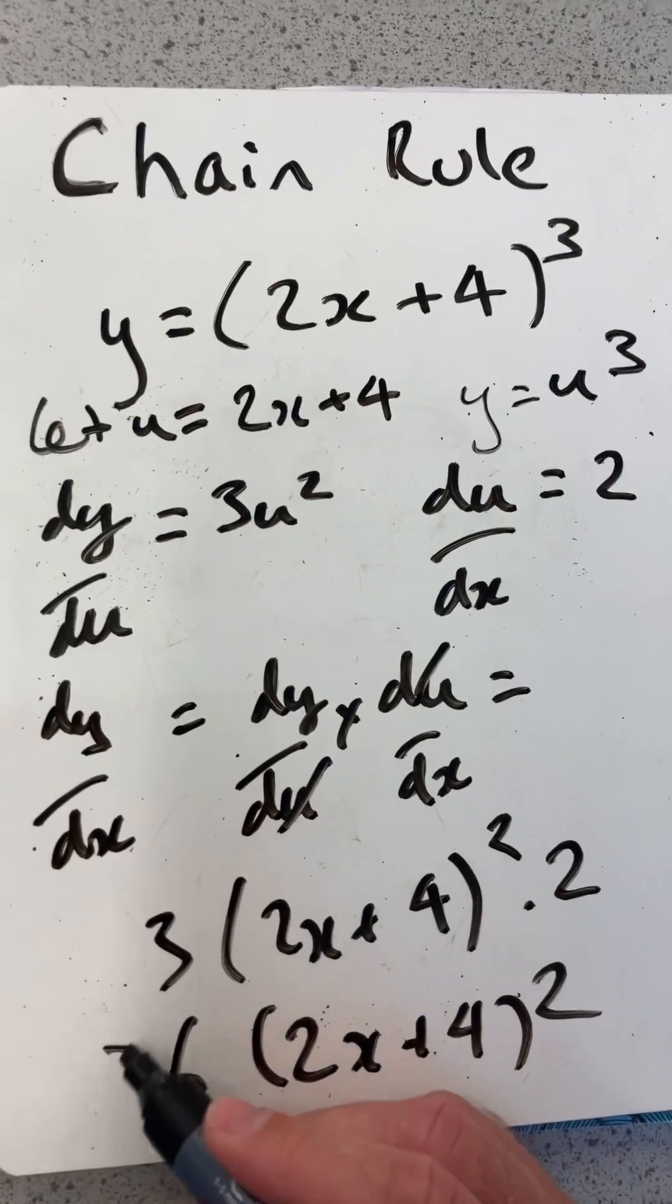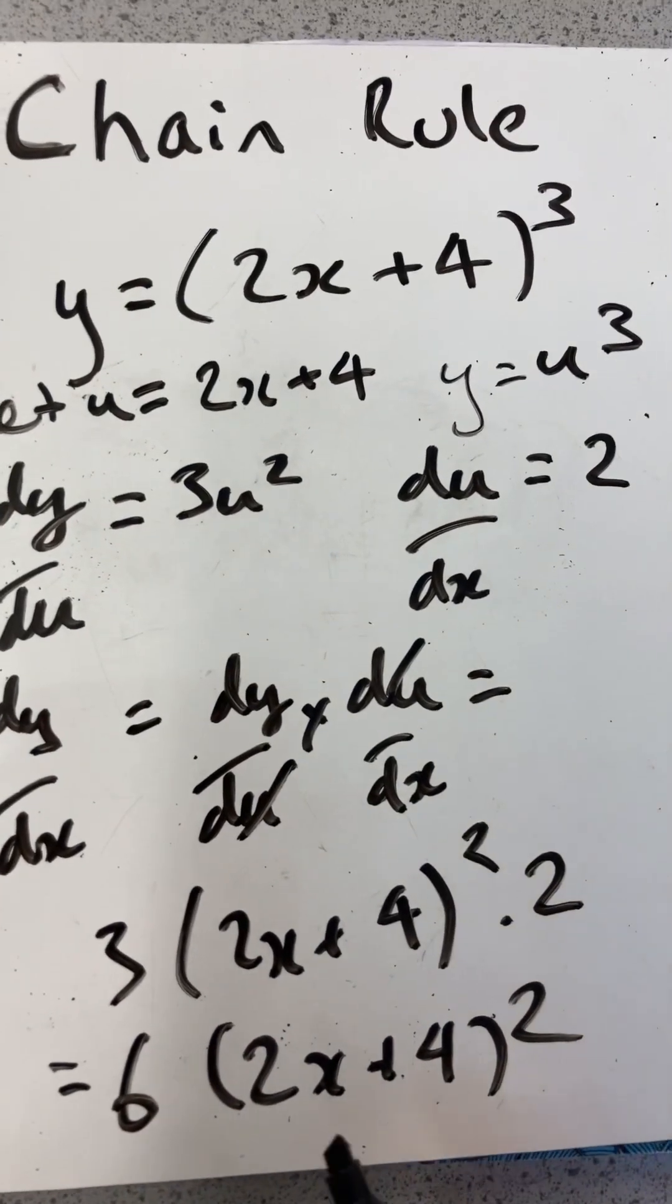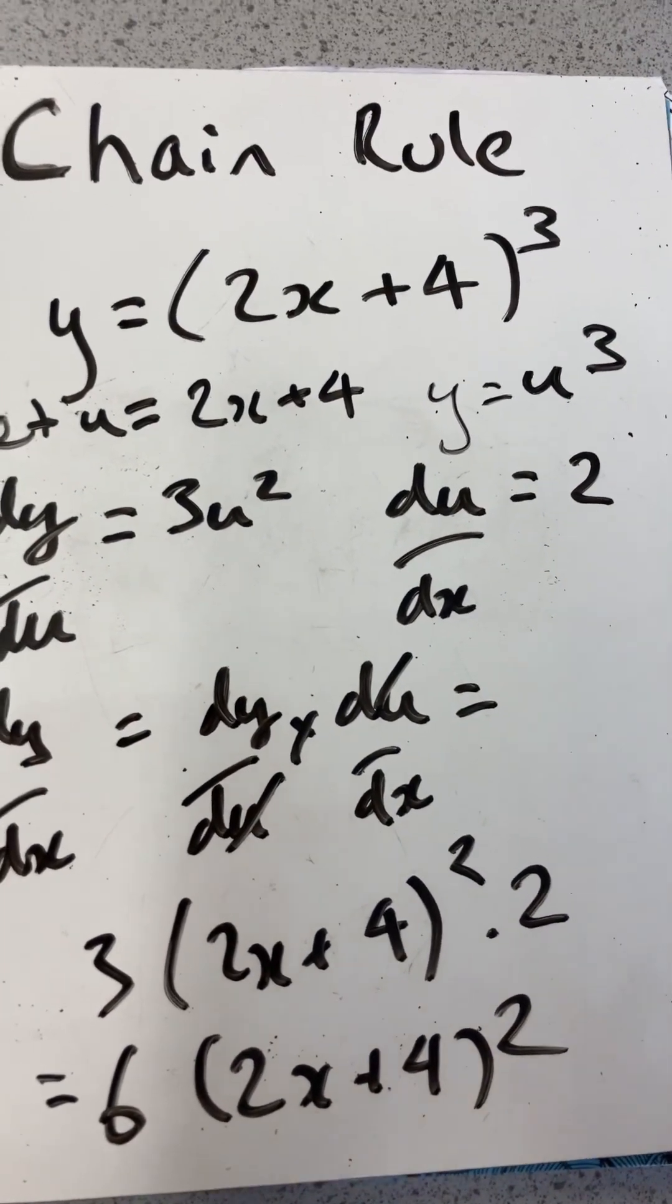So there we go. That's differentiating using the chain rule and we end up with 6, 2x plus 4 all squared. Thanks.